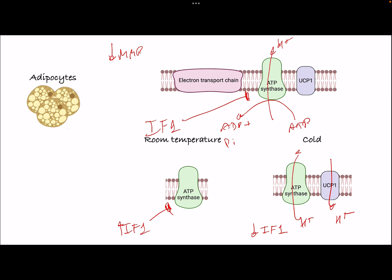We also found in adipocytes that when we overexpress IF1, these cells can no longer sustain mitochondrial membrane potential once UCP1 is active.